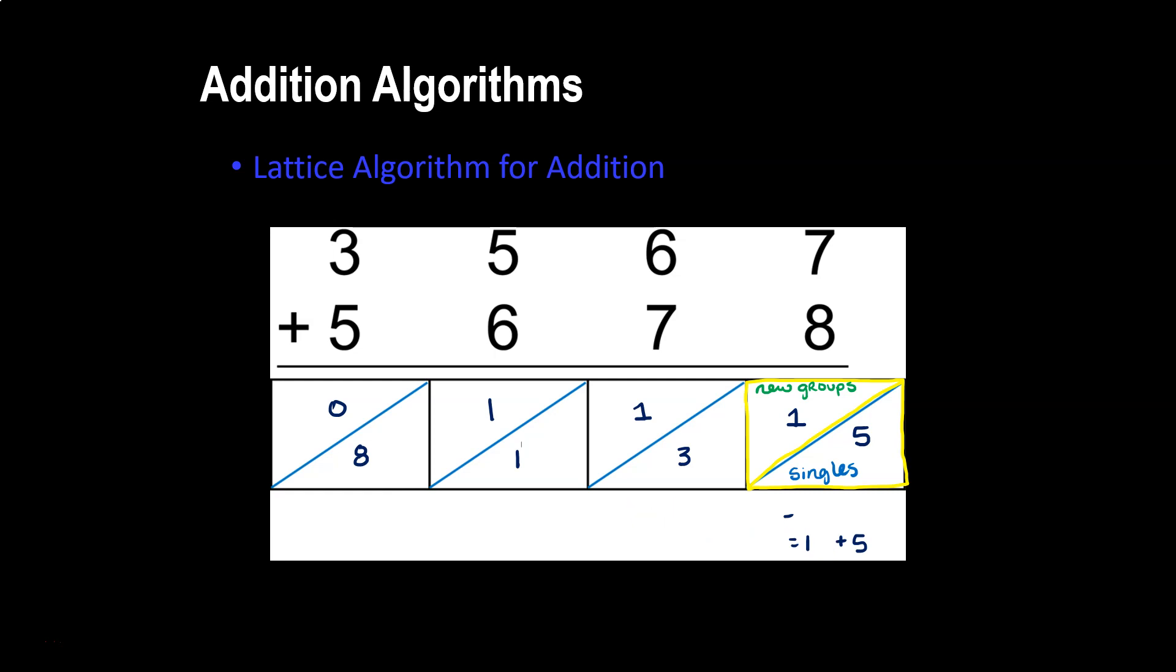Now that I have my lattice completely filled out, we need to add down the diagonals. This 5 in the ones place singles box doesn't have anything to add to, so we'll just copy it down. The next diagonal has 1 and 3, so that's 4. The next diagonal has 1 and 1, that's 2. And lastly we have 8 plus 1, which is 9. So our final answer is 9,245.